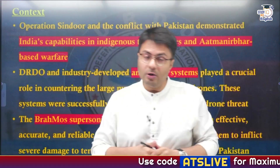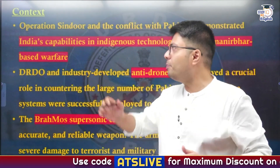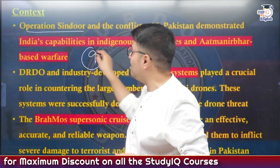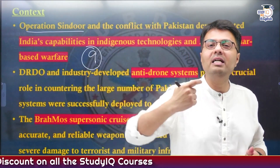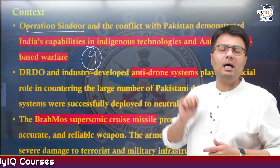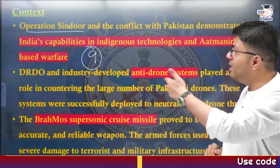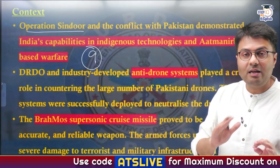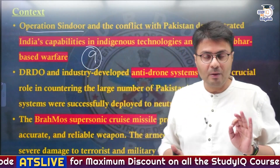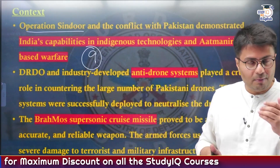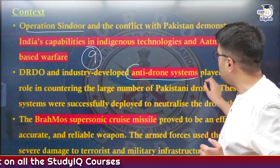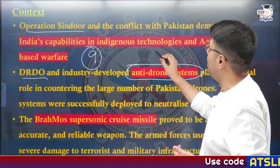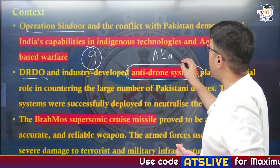Let us understand the context of today's discussion. We all know about Operation Sindoor, where the Indian government and its armed forces targeted as many as nine terror camps and their infrastructure located in different parts of Pakistan, be it POK or Pakistan's Punjab province. After this Indian attack on terrorist organizations, the Pakistani army retaliated by attacking our civilian and military infrastructure. To counter these attacks, the Indian government employed anti-drone systems developed by DRDO, one of the most important components being the Akash Missile.